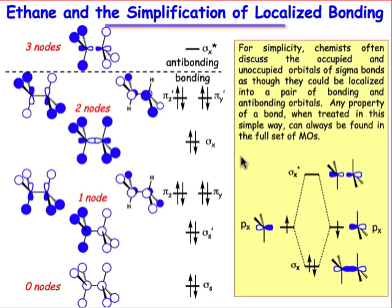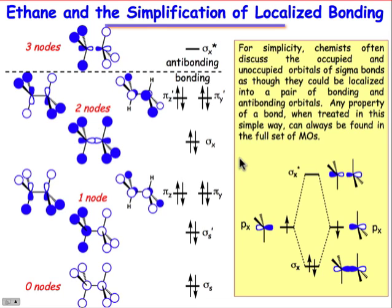Even though the molecular orbital model doesn't allow us to associate a specific molecular orbital with a particular bond, chemists often look at these pictures and identify σ and σ-star bonding as being derived from a pair of p orbitals coming together for constructive and destructive overlap. This is a localized view, but it's derived from these pictures. Anytime we need to understand the complete description of a bond, recognize that it's fully available in the complete set of molecular orbitals.